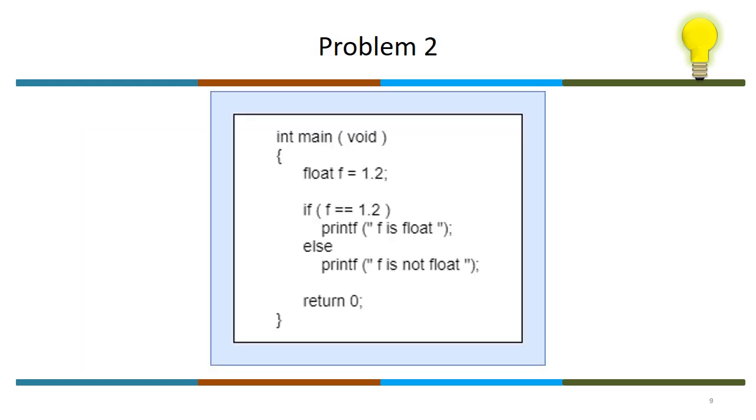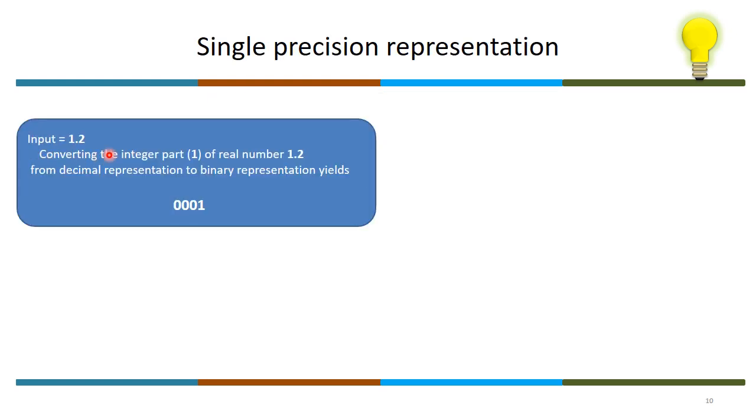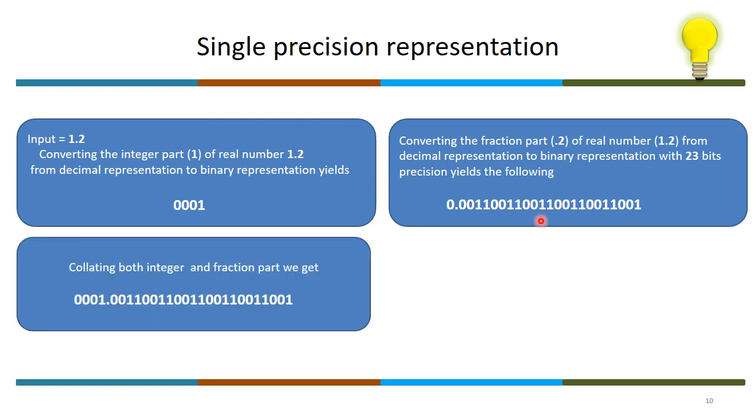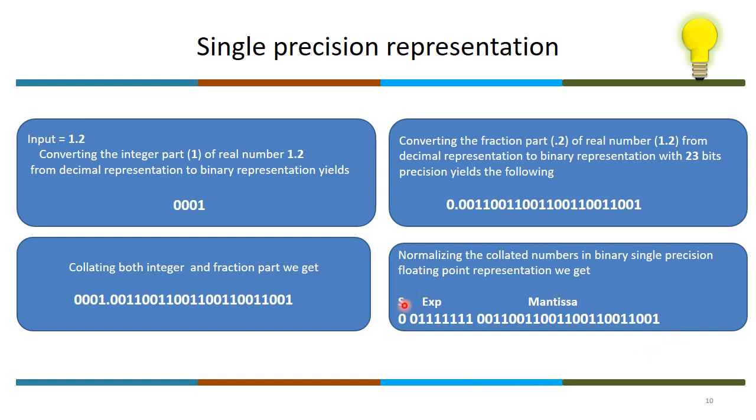Now the more interesting example is the second problem. Here we are comparing float 1.2 to double 1.2. The compiler based on the standard will convert this number 1.2 to double. The conversion of integer part is one. The conversion of fraction 0.2, unlike 0.25, cannot be represented as is in the binary form. Hence we take an approximation to the width of 23 bits.